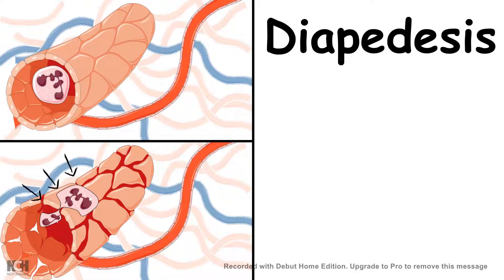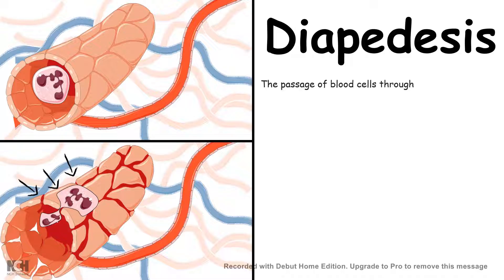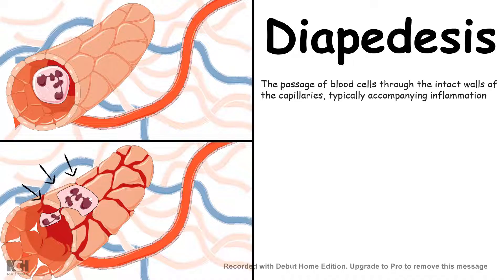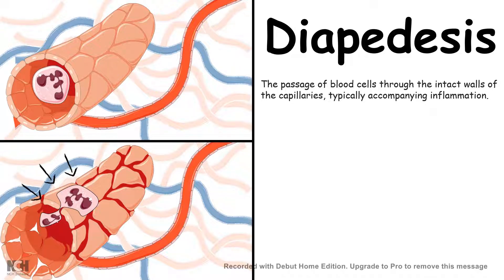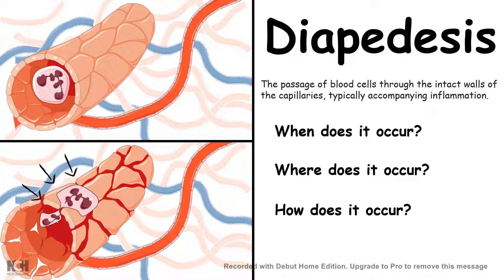In this video we are going to talk about the concept behind diapedesis, also known as extravasation of blood cells. Diapedesis is the passage of blood cells through the intact capillary wall. Typically neutrophils or monocytes undergo diapedesis. In order to understand this concept, we need to understand when it occurs, where it occurs, and how it occurs.